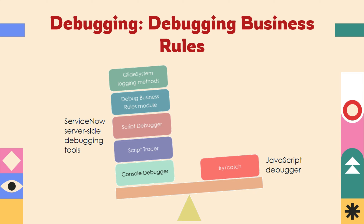For debugging business rules, we have several methods: Glide System logging methods, the debug business rules module, script debugger, script tracer, and console debugger. We have multiple ServiceNow server side debugging tools available. JavaScript's try-catch is popular in JavaScript generally, but in ServiceNow we can use these dedicated methods, which make it easy to find where a business rule is stuck and what it is doing.